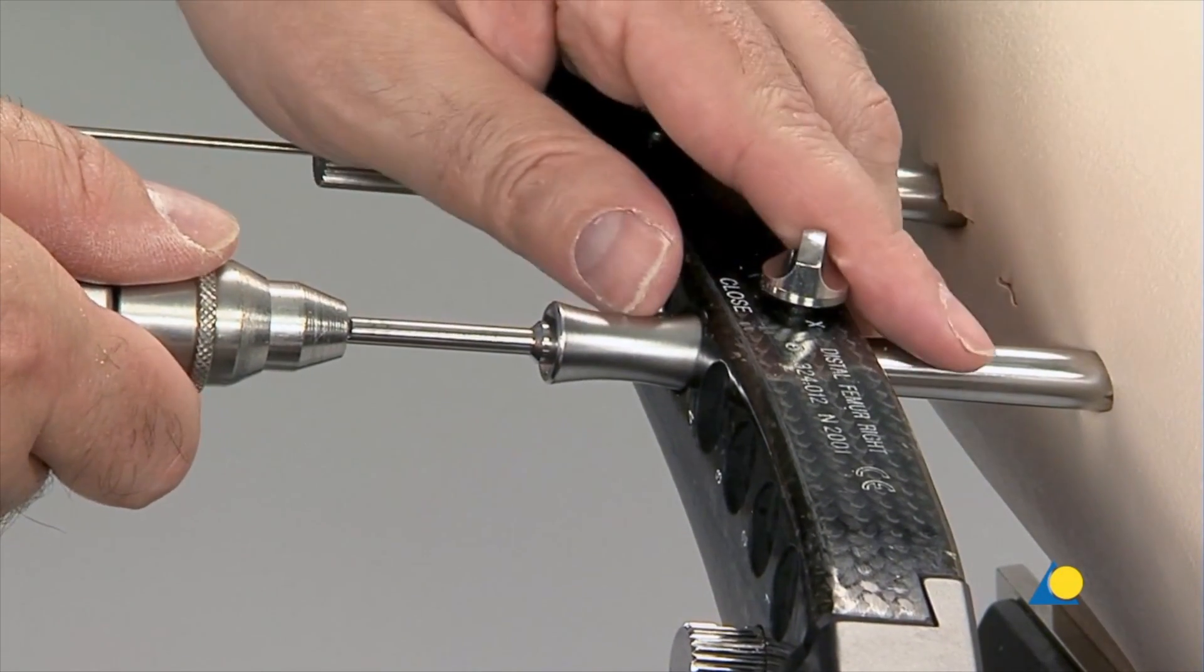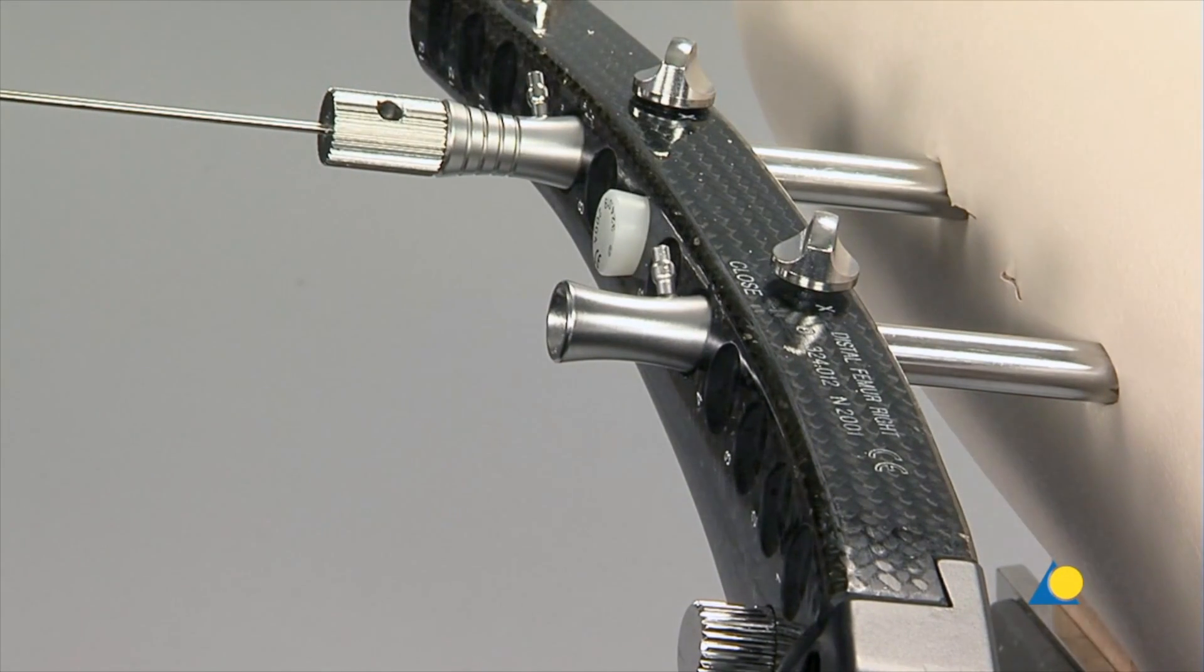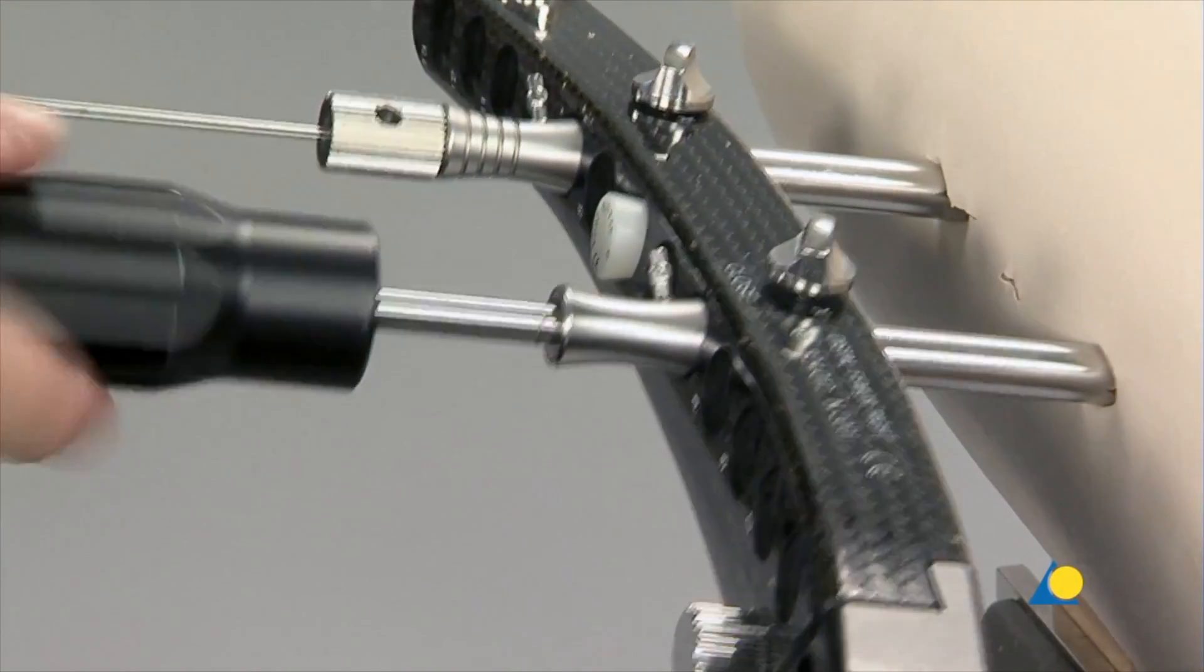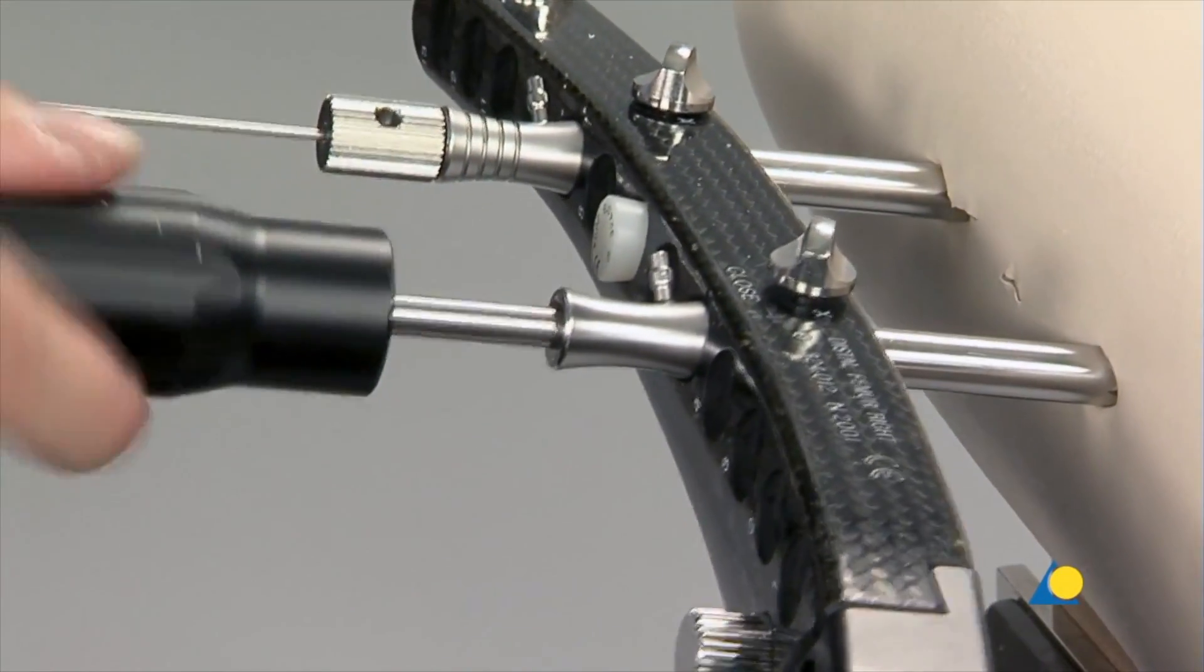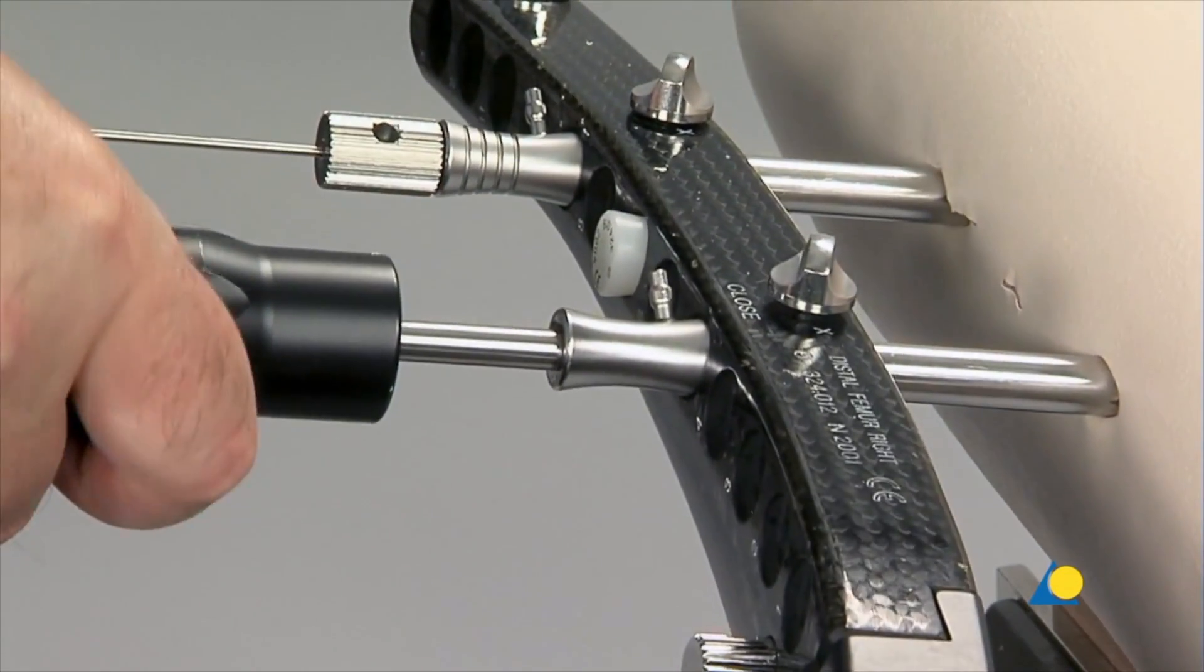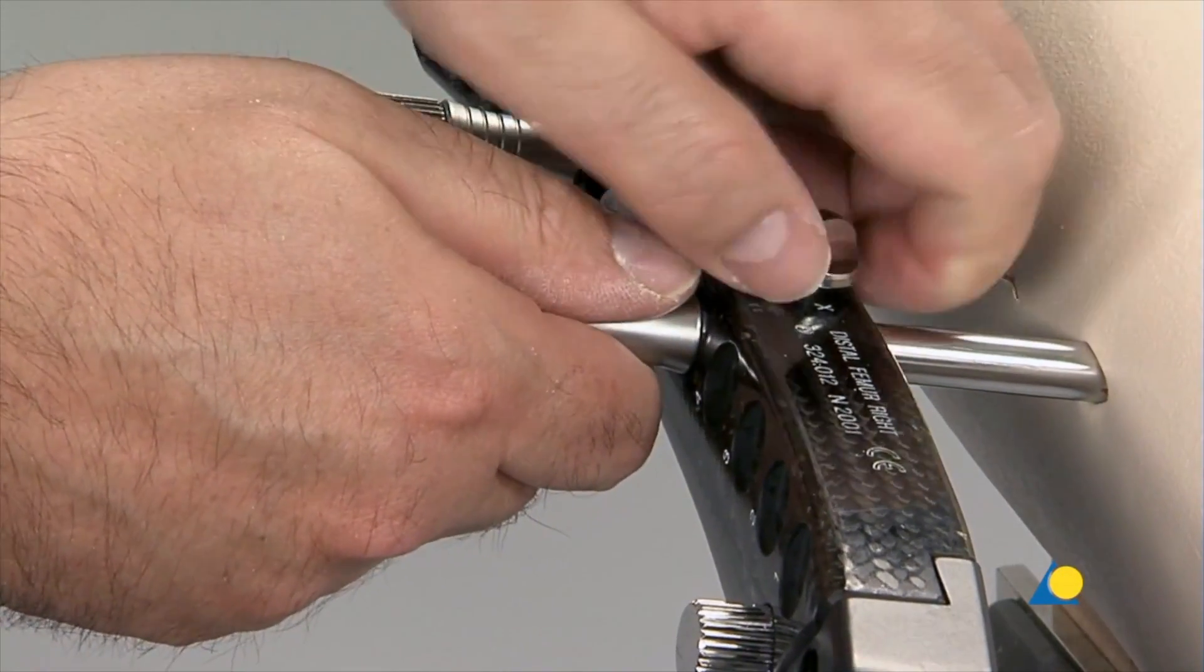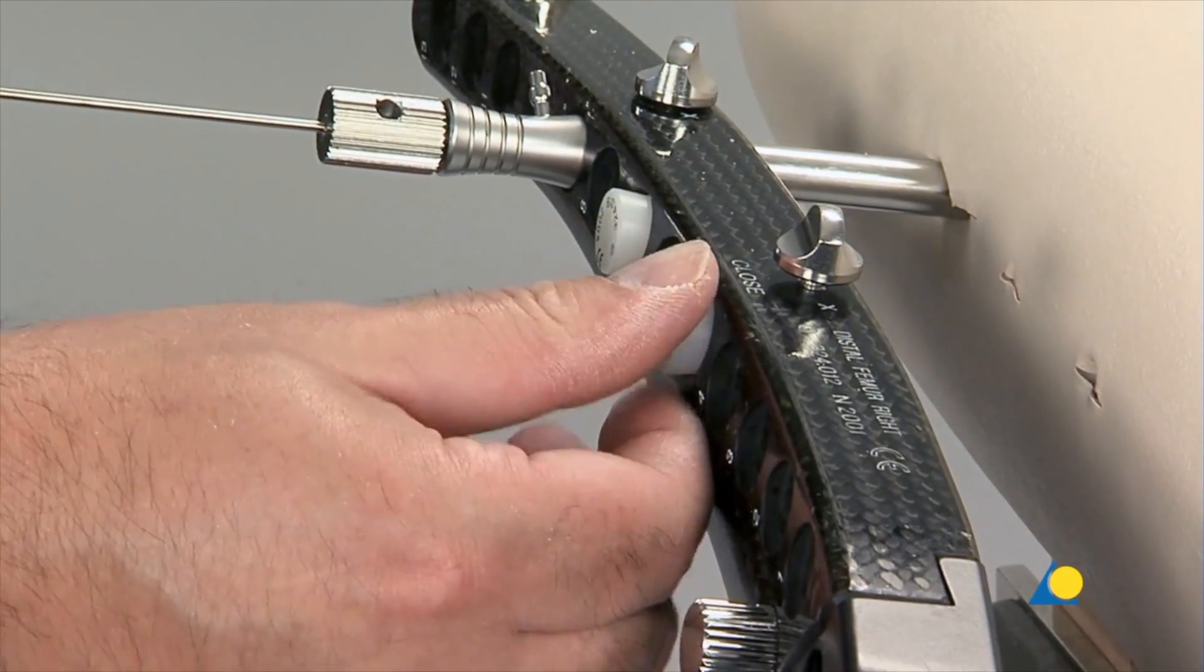The LCP plate holes in the shaft also allow insertion of cortex screws. However, as the aiming arm only permits the insertion of locking screws, the aiming arm must be removed, and the cortex screw inserted in the usual manner. Two bicortical and one monocortical screw will be placed in the femoral shaft. In osteoporotic bone, more screws can be used. However, the fracture must be bridged, so at least two plate holes must be left free.